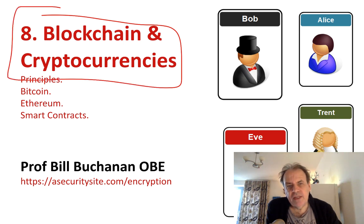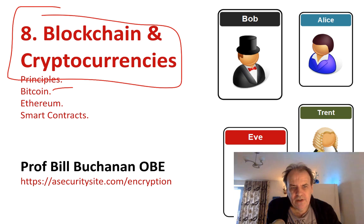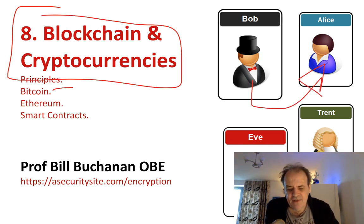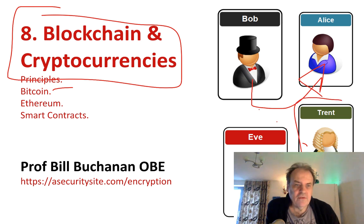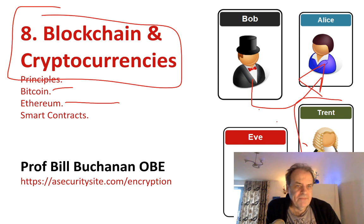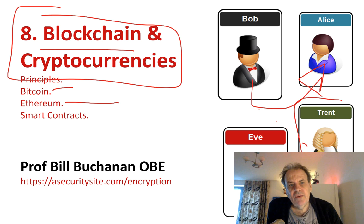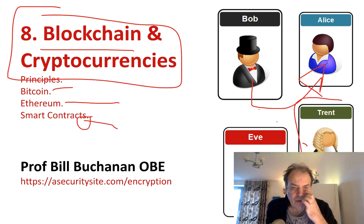We'll look at evolving areas around blockchain and cryptocurrency, especially how Bitcoin works and how Bob can send funds to Alice through cryptocurrencies without involving a trusted entity. We'll also look at Ethereum, which provides a good foundation through smart contracts with blockchain, and examine what a smart contract actually looks like.